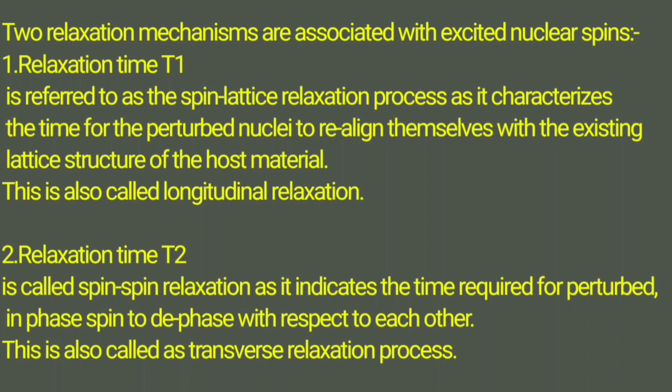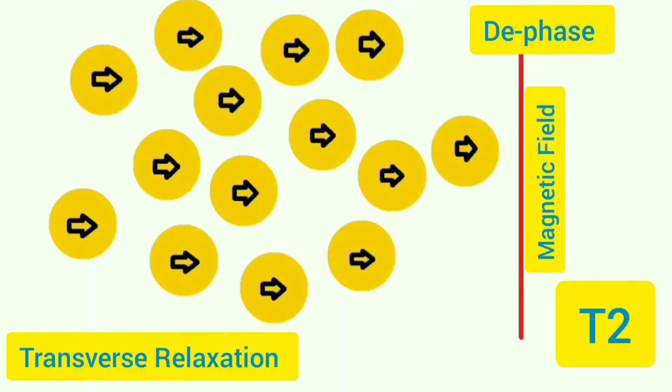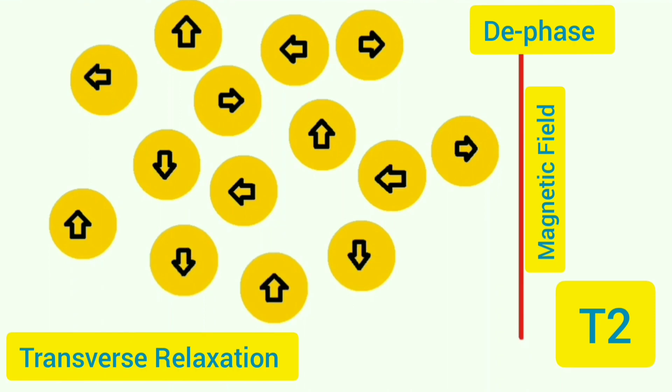After removal of RF energy, we get the T1. And after the magnetic field is removed, we get T2. Now when the magnetic field is removed, the protons dephase with each other. With the transverse relaxation, we get the T2 signal.